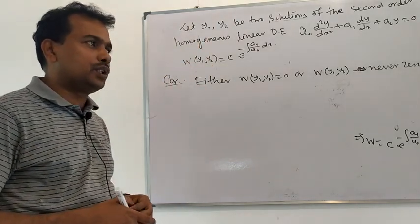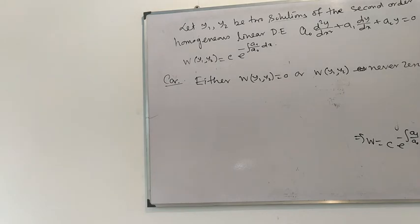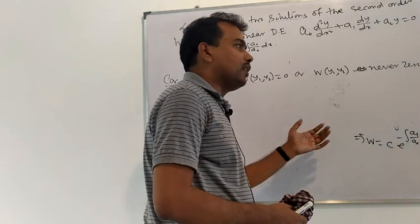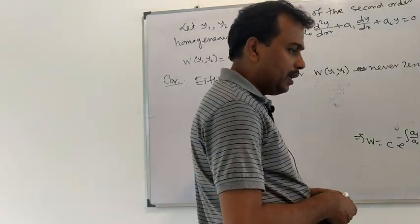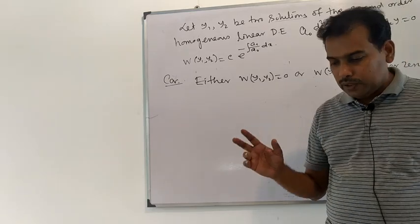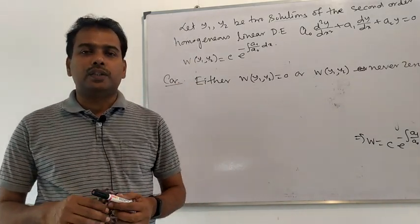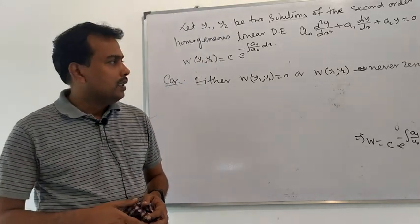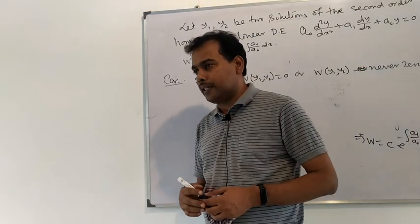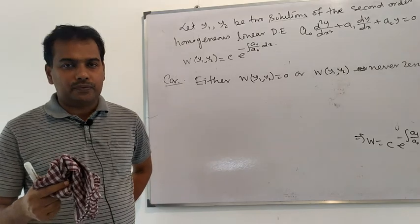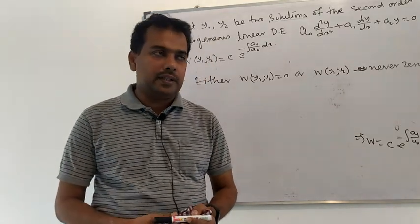Therefore, if y1 and y2 are linearly dependent, the Wronskian equals zero. If y1 and y2 are linearly independent solutions of the second order linear differential equation, then the Wronskian is not equal to zero.